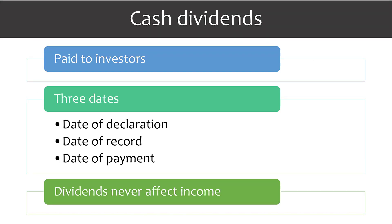There are three relevant dates for dividends: date of declaration, date of record, and date of payment. By the way, dividends never impact income. They reduce retained earnings.